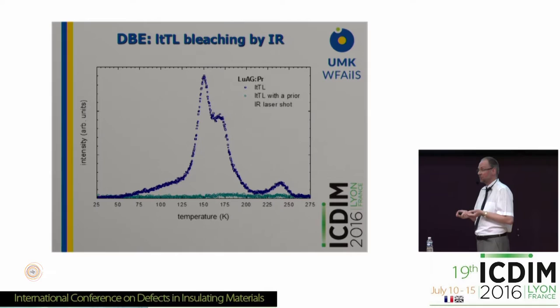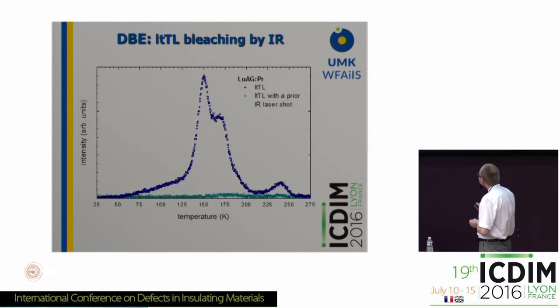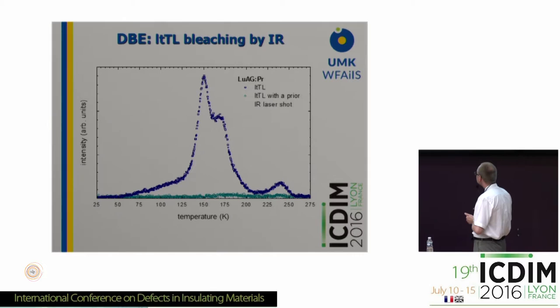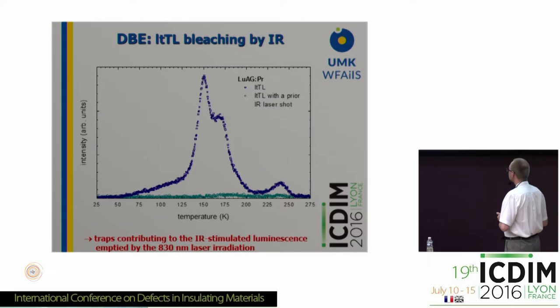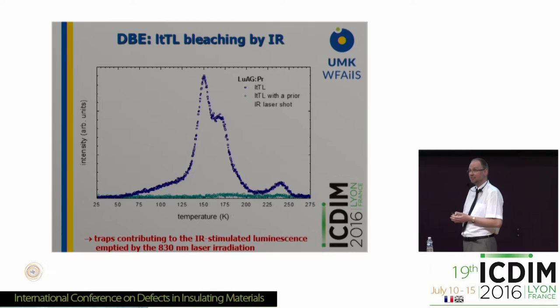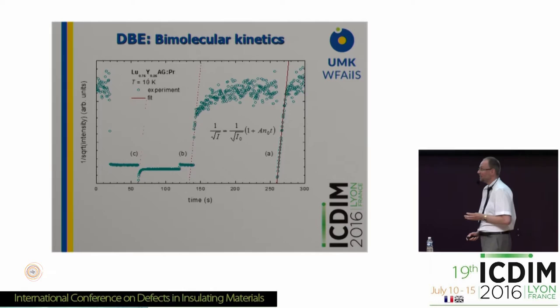What we can add to this experiment is to measure thermoluminescence. This is a standard glow curve of LuAG with Praseodymium irradiated at 10 Kelvins. The second curve is the same measurement with only a very short shot of laser light — one second. We irradiate the crystals for 10 minutes as before, and then before heating the crystal we switch on the laser for one second, and we see that the whole TL is bleached. This focuses our attention on shallow traps that are in the crystals but can be completely emptied by laser radiation.